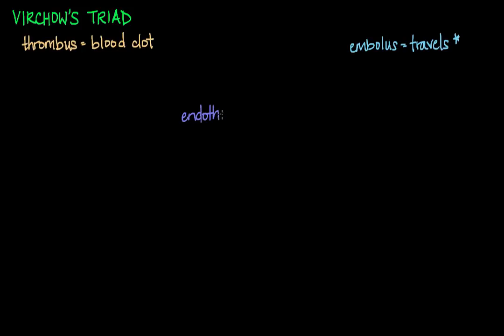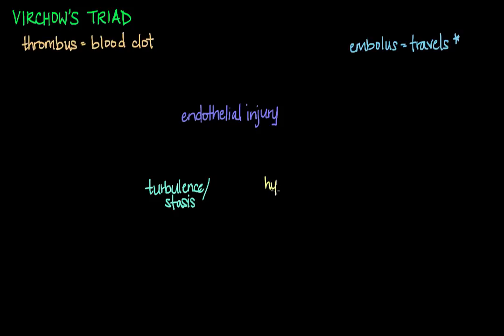Some would argue the most important factor is endothelial injury — basically injury to the blood vessel's inner wall, which is what the endothelium is. The second factor is either turbulence or stasis of blood flow. The third factor is hypercoagulability, which is an increased propensity to clot. All three of these factors describe Virchow's triad, which leads to the formation of a thrombus.